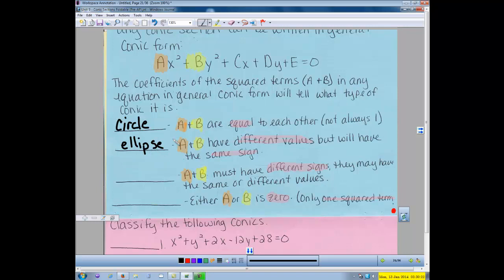When a and b have different signs, but they may or may not have different values, then we have a hyperbola. And we have a parabola when a or b is zero, so there's only one square term in there.